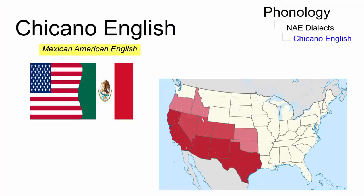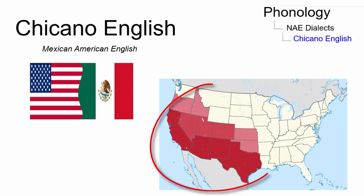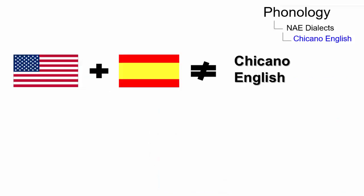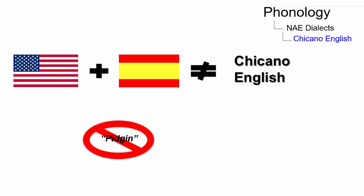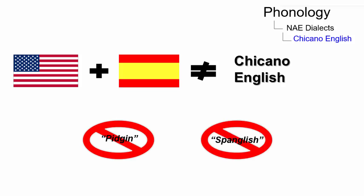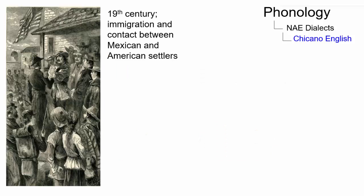Chicano English, also referred to as Mexican-American English, is a variety of North American English predominantly spoken by Mexican-Americans or Chicanos in the southwest of the United States. The notion that Chicano English is simply American English influenced by Spanish is widespread, but inaccurate. Chicano English is neither a pidgin nor Spanglish, but rather a fully formed dialect of North American English.